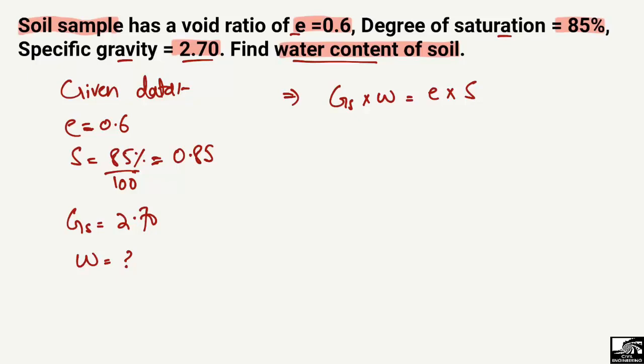If we look at this formula, specific gravity is given, void ratio is given, and degree of saturation is given. The only unknown here is water content, so we can use this formula to find the water content of the soil sample.